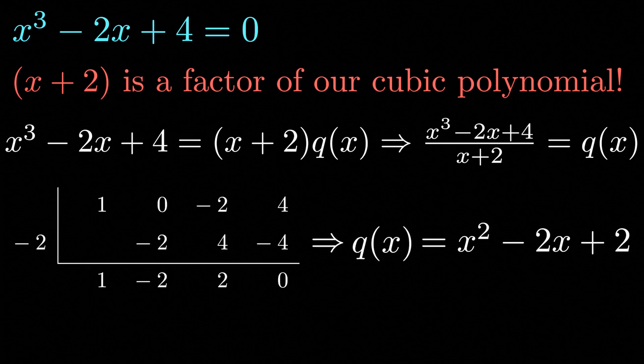This synthetic division tells us that q(x) equals x squared minus 2x plus 2, which we can solve using the quadratic formula. So we have our three solutions: x1 equals minus 2, x2 equals 1 plus i, and x3 equals 1 minus i.